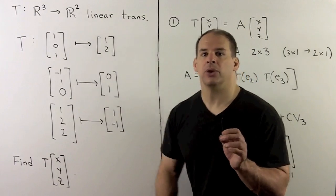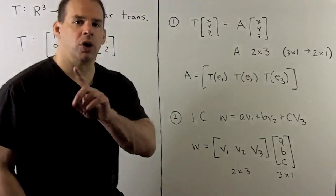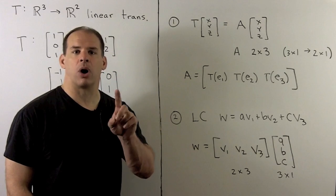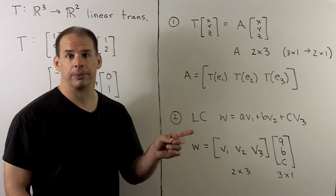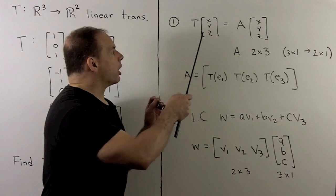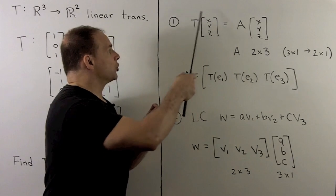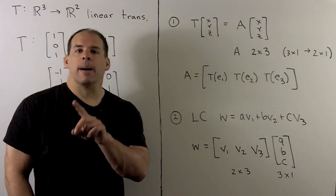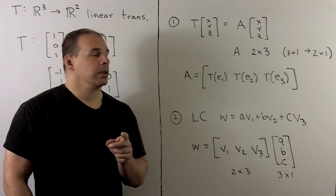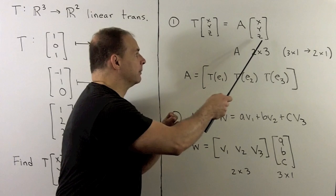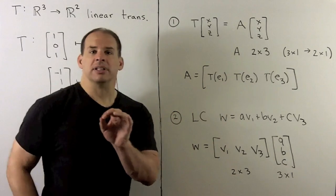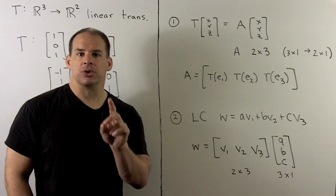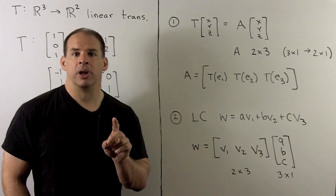We proceed in steps. First, we recall the associated matrix to a linear transformation going from Rm to some Rn. Since we're going from R3 to R2, our linear transformation takes three vectors. Think of it as a matrix vector product. So here we'll have A times XYZ. To get the dimensions right, A has to be a two-by-three matrix, so two rows, three columns.